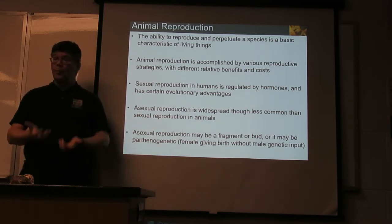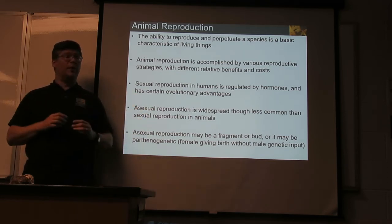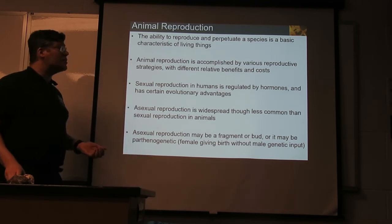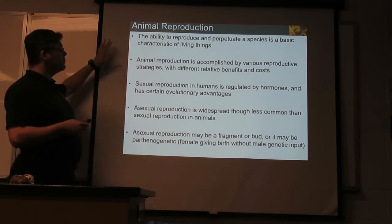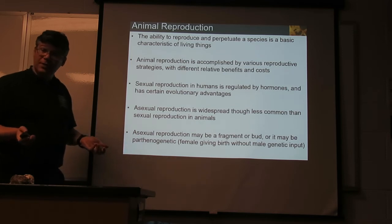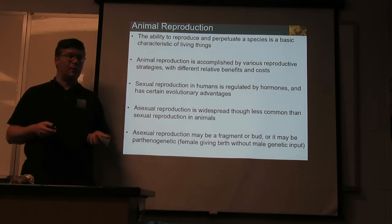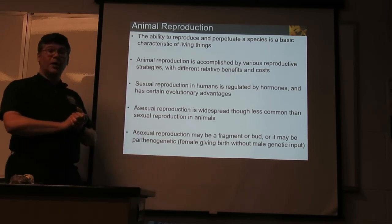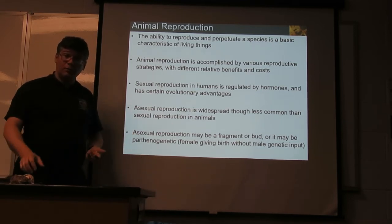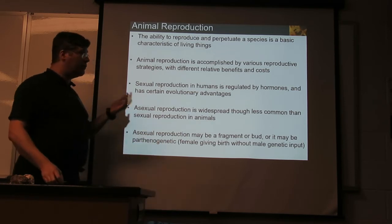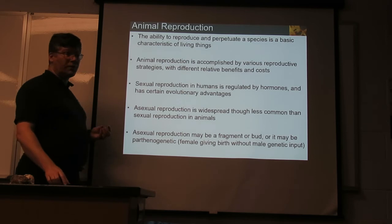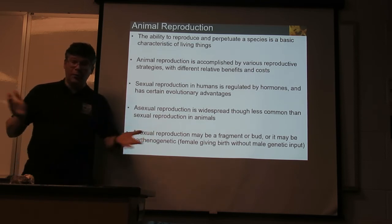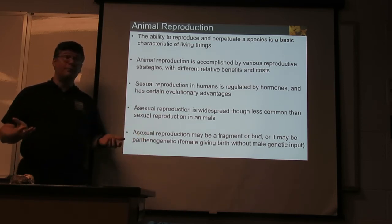So endocrine — hormones — regulate longer-term things, and one very important area that hormones regulate is reproduction. The reproductive system is the last of our 11 major organ systems. Reproducing is a basic feature of living things. Animals have a variety of possible strategies with trade-offs, so different things work for different ones. In humans and all the animals that matter, the patterns of sexual reproduction are regulated by several different hormones.